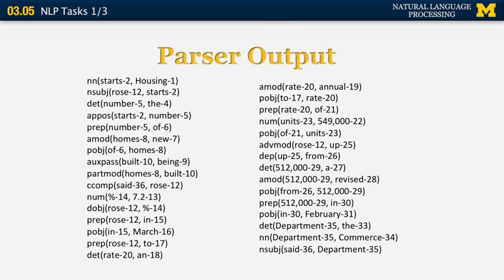You just need to look for a number that only appears once — that would be the root of the sentence. Then all the children of that root node are the second-tier nodes, and recursively you can build the entire dependency tree. I'll let you figure out this entire tree as homework. This concludes the first part of the section on NLP tasks, which included morphology, part of speech tagging, and parsing. We'll continue later with some additional NLP tasks.